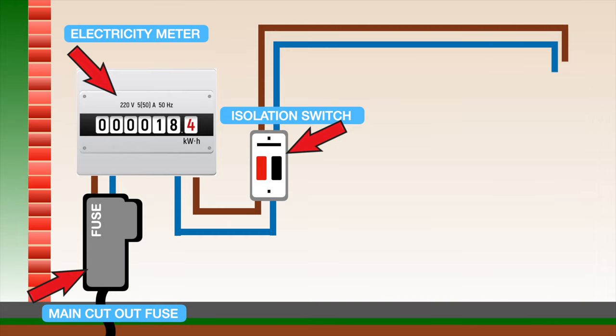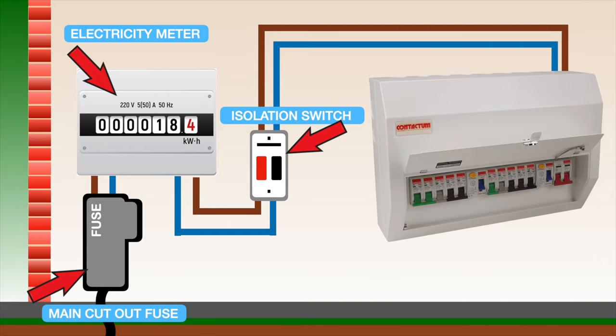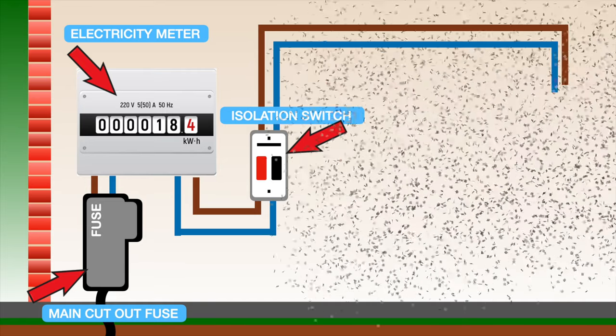There are a variety of different consumer units you can purchase depending on the amount of circuits you have within your house. The consumer unit we're going to be looking at today is a 10-way consumer unit, which means it can accommodate 10 circuits. So let's go ahead and take a look inside.